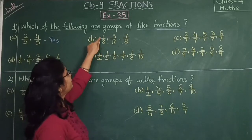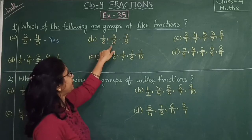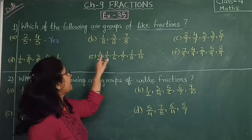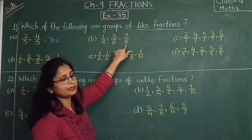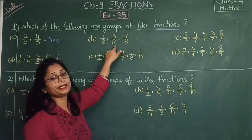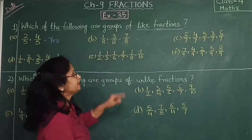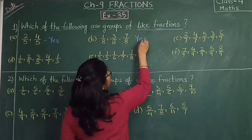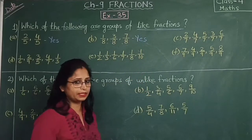Then B: 1 by 8, 3 by 8, then 7 by 8. Here the denominator is the same. The denominator is the same, so this is a like fraction. Yes, it is also a like fraction. So you will write yes. Clear?